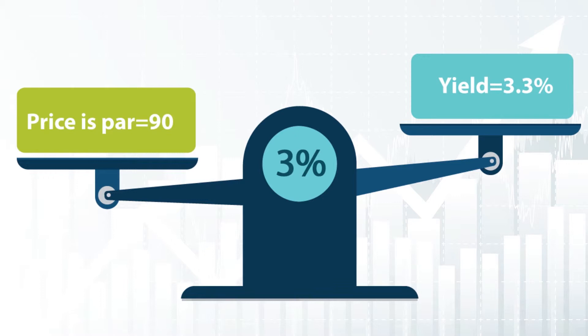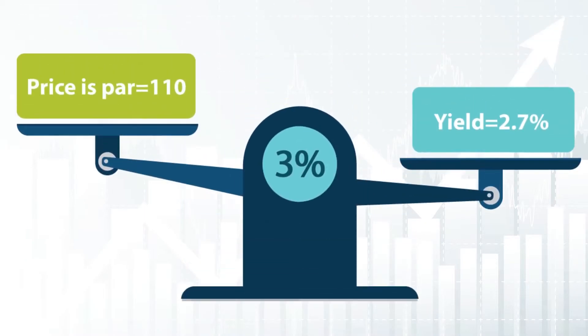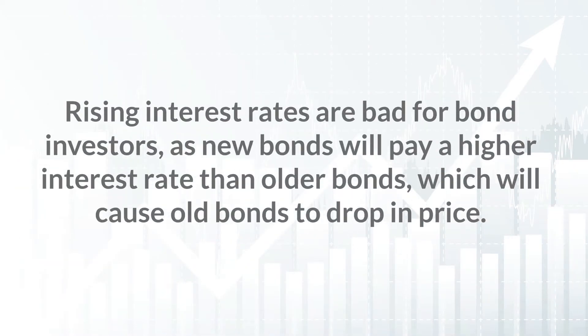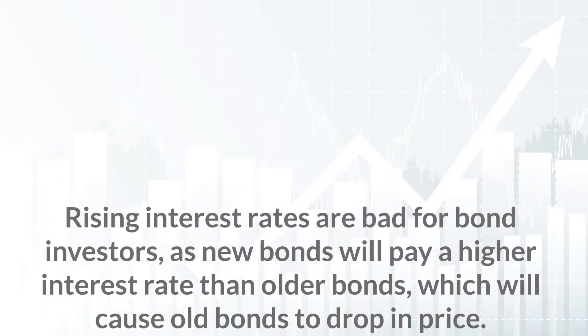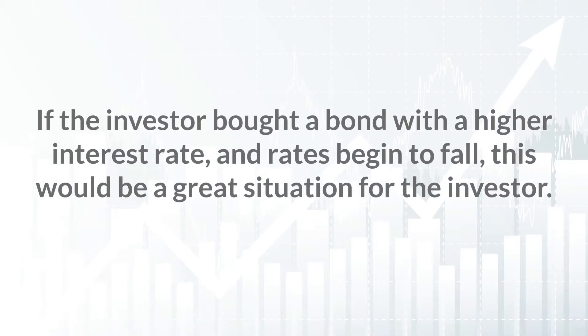This bond has a discount price, or is said to be traded at a discount to par, and would make the yield higher at 3.3%. If interest rates fall, the market will price this bond accordingly. Even though the coupon of 3% won't change, the bond price would move higher since the investor would be getting a higher coupon than other comparable investments in the market, so the higher price would make the yield slightly lower in line with other market rates. This bond has a premium price or is said to be trading at a premium to par. Rising interest rates are bad for bond investors, as new bonds will pay a higher interest rate than older bonds, which will cause the old bonds to drop in price. On the other hand, if the investor bought a bond with a higher interest rate and rates begin to fall, this would be a great situation for the investor.